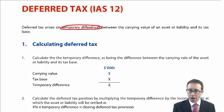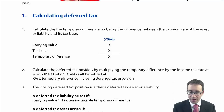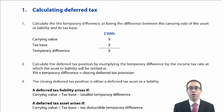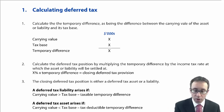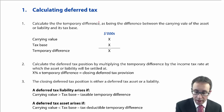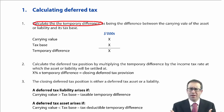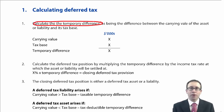We need to calculate deferred tax. Remember there were four steps. The first was to work out the temporary difference by comparing the carrying value. In F7 it was all about property, plant and equipment.